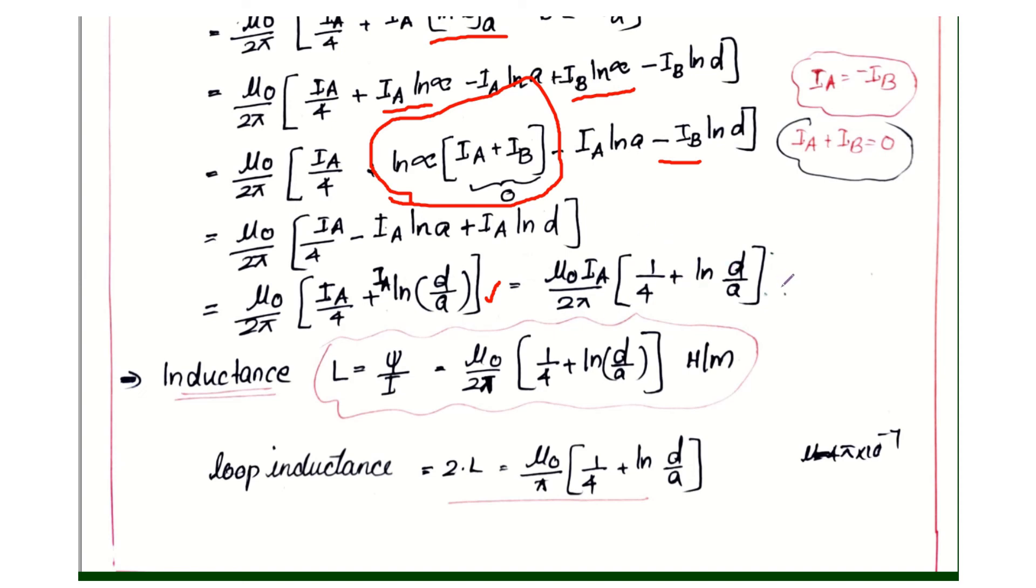IA plus ln D by a, that much henry per meter. This is the inductance of two wire transmission line.